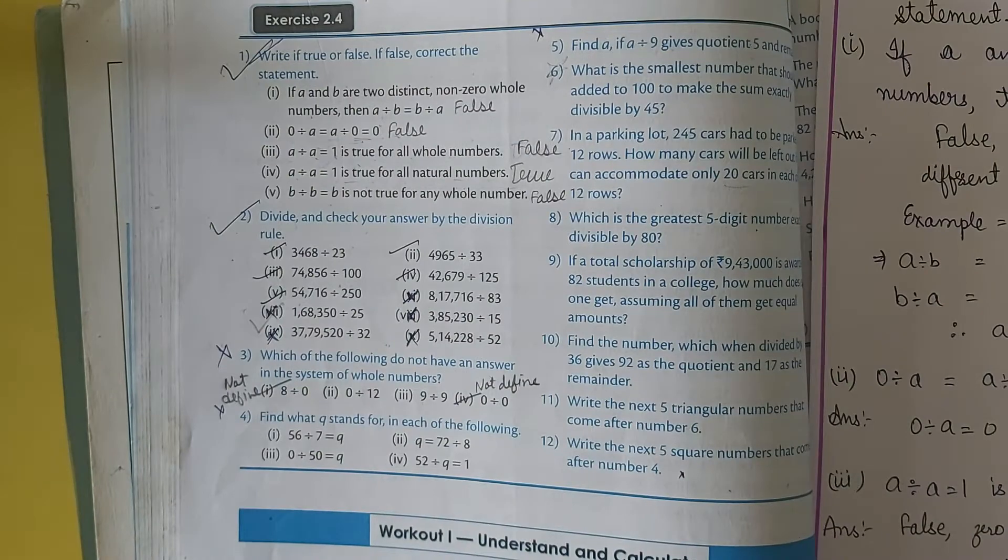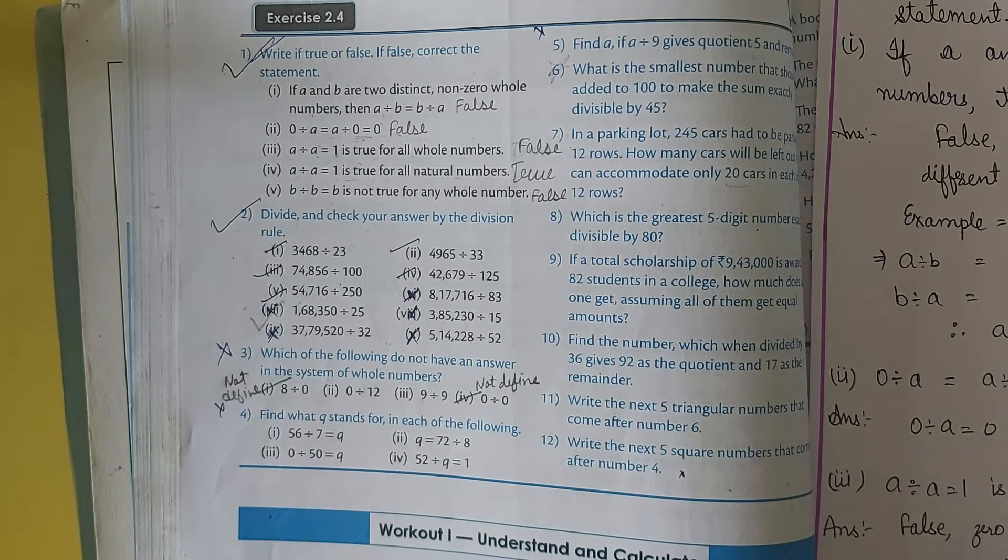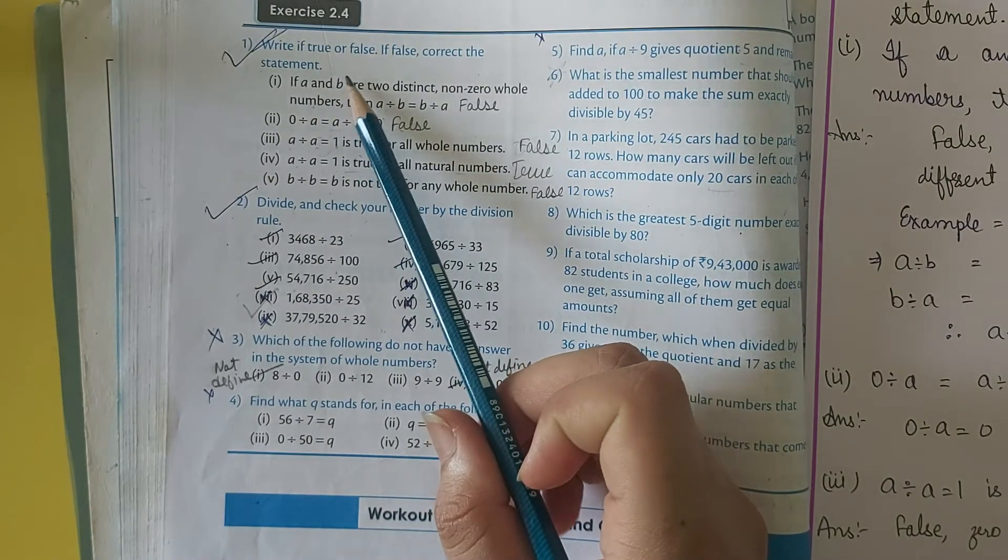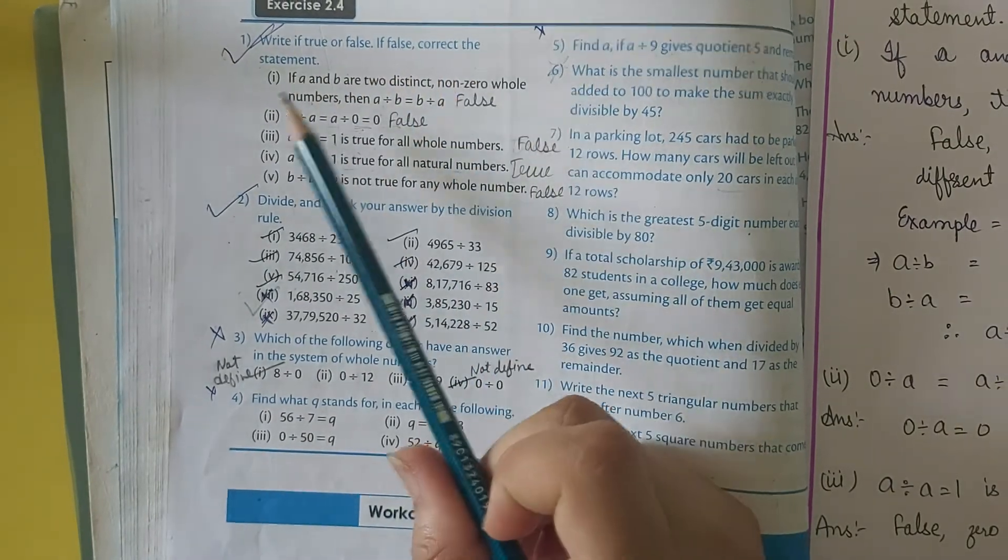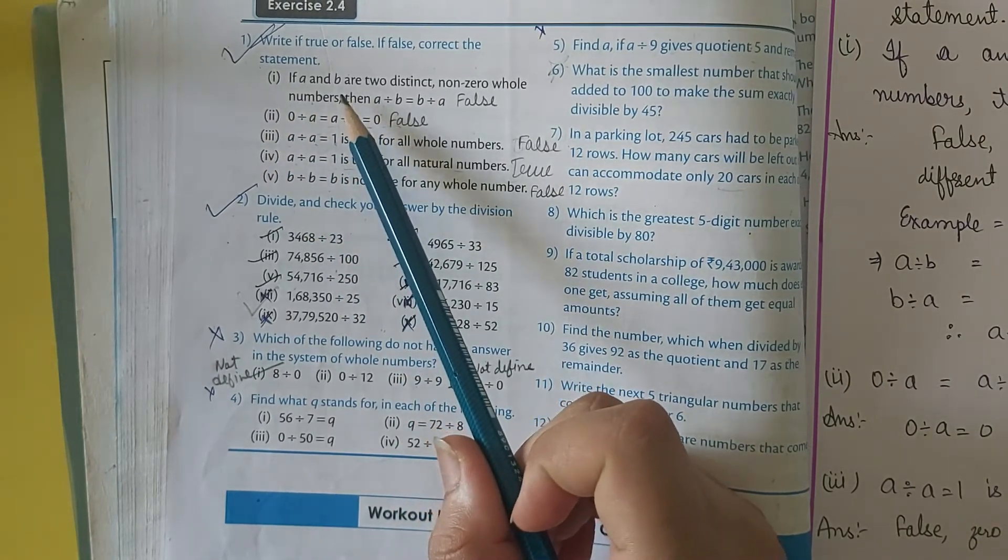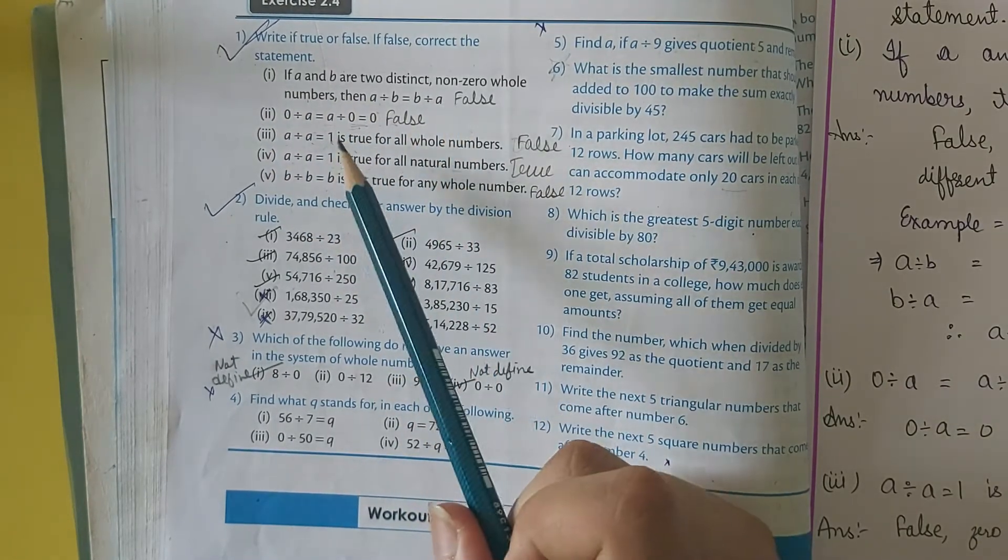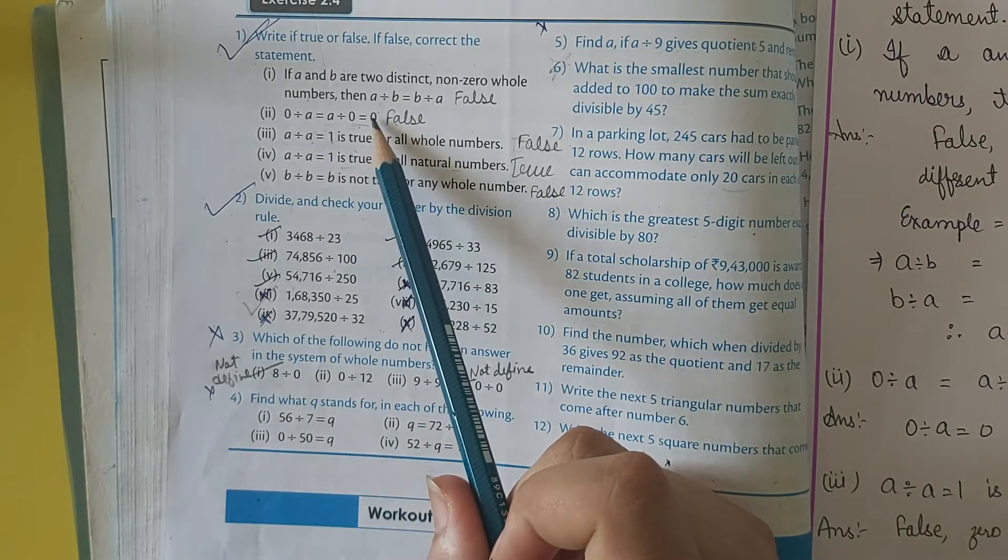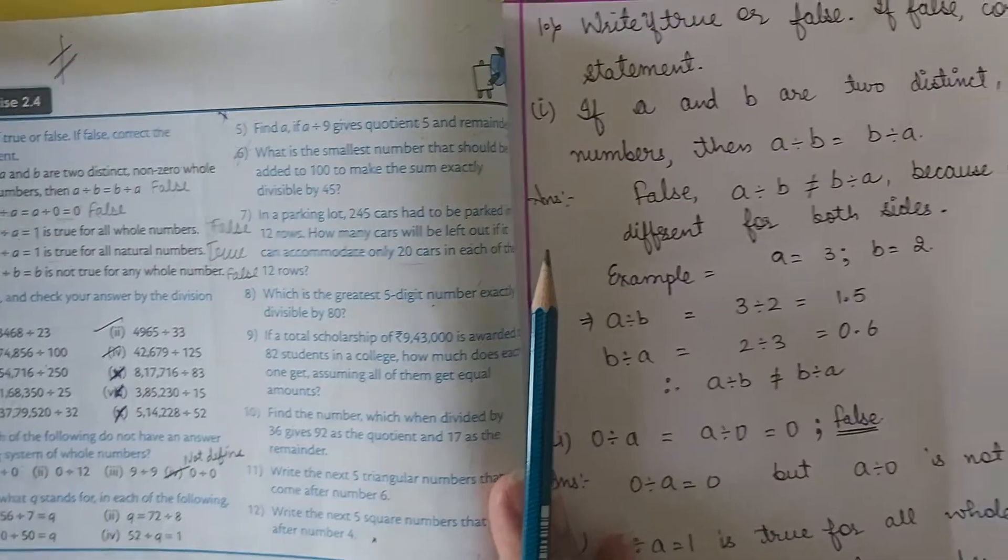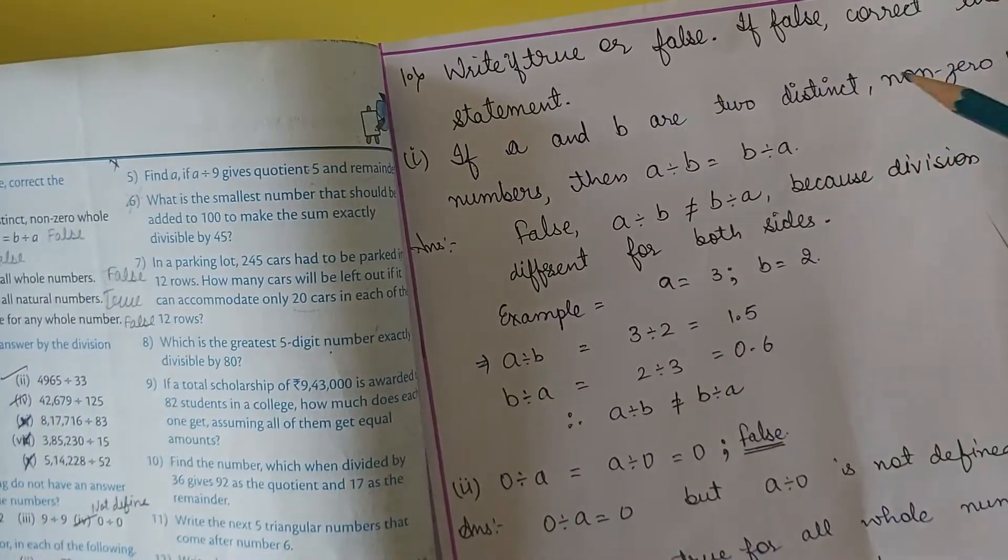Now let us start with exercise 2.4. The first question is write if true or false. If false, correct the statement. First question is, if A and B are two distinct non-zero whole numbers, then A divided by B equals B divided by A. So this statement is false. Why is this statement false?